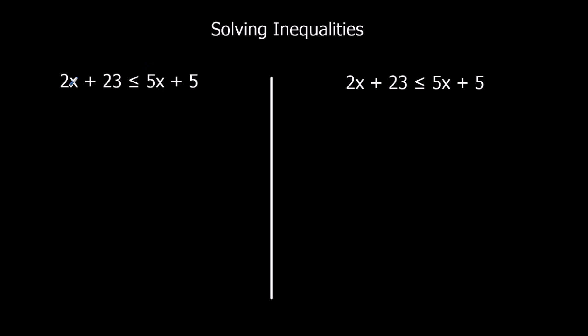So we've got 5x and we've got 2x. I'm going to get rid of the 2x, so minus 2x from both sides. That gives me 23 is less than or equal to 3x plus 5. Now I'm going to take 5 away from both sides. So that's 18 is less than or equal to 3x.